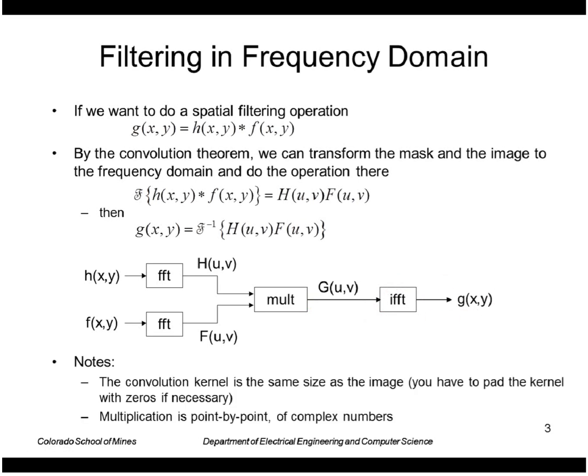The convolution kernel H has to be the same size as the image. The reason is that we want to do a point by point multiplication of these two transforms, so those have to be the same size. If necessary we will pad the filter to be the same size as the image.